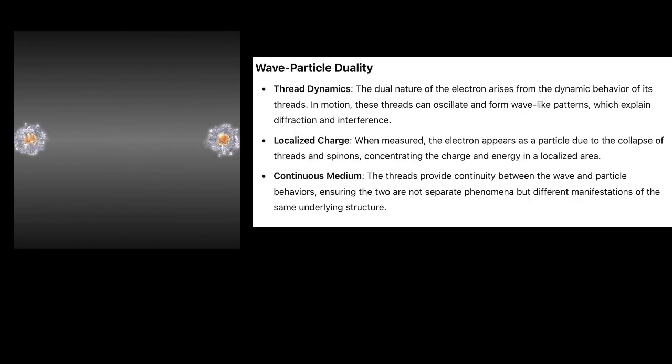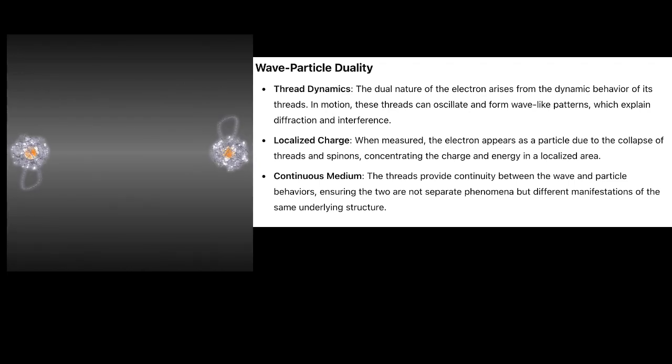Wave Particle Duality: Thread Dynamics. The dual nature of the electron arises from the dynamic behavior of its threads. In motion, these threads can oscillate and form wave-like patterns, which explain diffraction and interference.